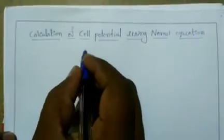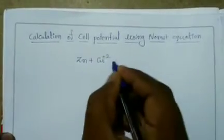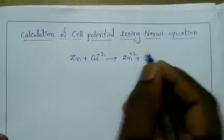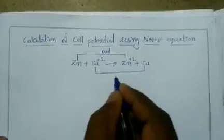Today our topic is calculation of cell potential using the Nernst equation. First, write the electrochemical cell redox reaction: Zn plus Cu²⁺ gives Zn²⁺ plus Cu. Here at the zinc electrode, oxidation takes place, and at the copper electrode, reduction takes place.